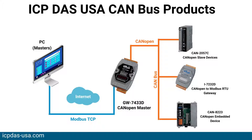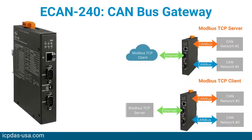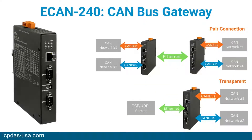ICP-DAS USA provides a wide selection of CAN communication converters and gateways. The ECAN 240 is a Modbus TCP two-port CAN Bus gateway module. The module communicates via Ethernet based on Modbus TCP industrial protocol, allowing easy integration within an industrial network. It includes a two-port CAN Bus Modbus interface, allowing multiple CAN applications to be supported, such as CAN bridge or CAN message router.